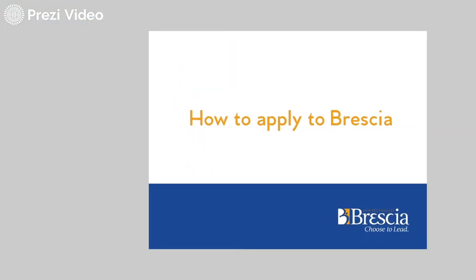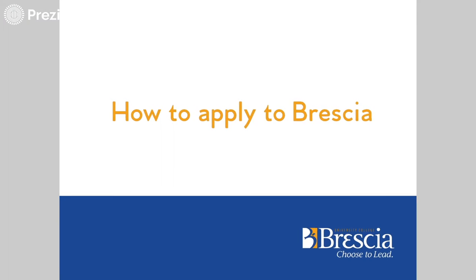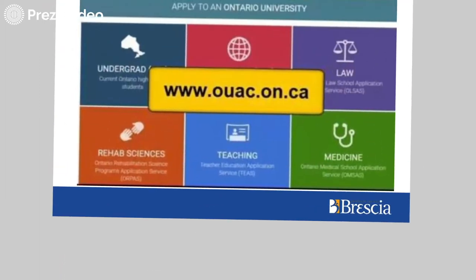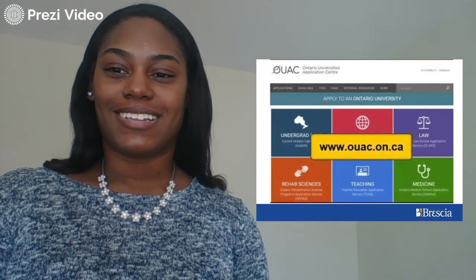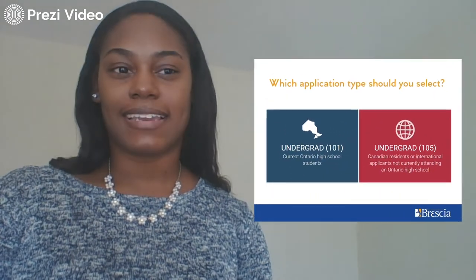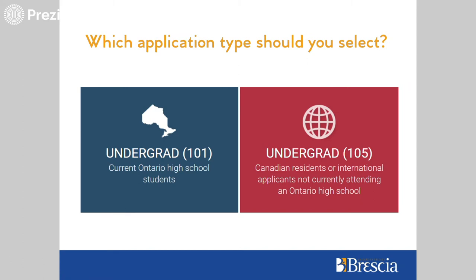Now let's find out how to apply to Prussia. Students can apply using the Ontario University Application Center, or the OUAC. The OUAC is a centralized processing center for applications for undergraduate admissions to universities in Ontario. If you are currently studying at an Ontario high school, you would be considered a 101 applicant. You will require a PIN from your school's guidance team to access and complete your application.